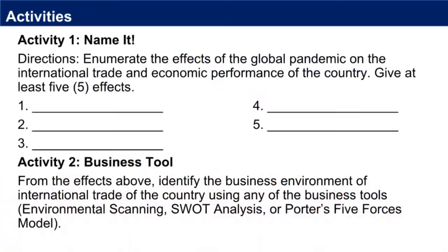For your activities, number one: enumerate the effects of the global pandemic on the international trade and economic performance of the country — give at least five effects. Activity number two: from the effects above, identify the business environment of international trade of the country using any of the business tools — environmental scanning, SWOT analysis, or Porter's Five Forces model. You may answer this after watching the video.